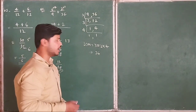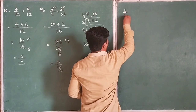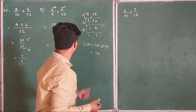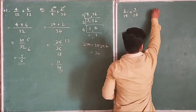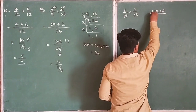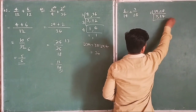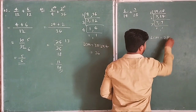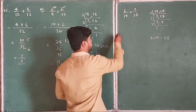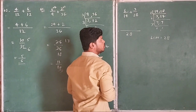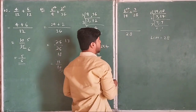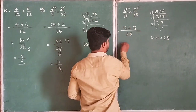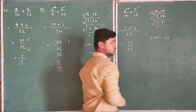Now we solve another example: 6/14 plus 3/28. We take the LCM of the denominators 14 and 28. Calculating: 2×7=14, 2×2=4, 7×1=7, so LCM is 2×2×7=28. We write 28 as the common denominator. For the first fraction, 28÷14=2, so we multiply 6 by 2 to get 12. For the second fraction, 28÷28=1, so we multiply 3 by 1 to get 3. That gives 12 plus 3 = 15/28. The correct answer is 15/28.